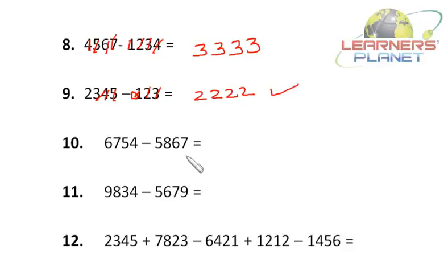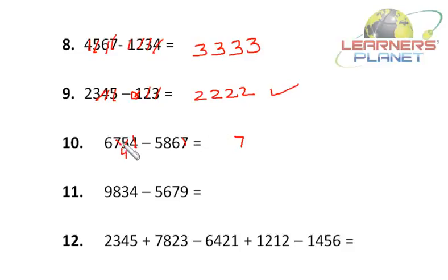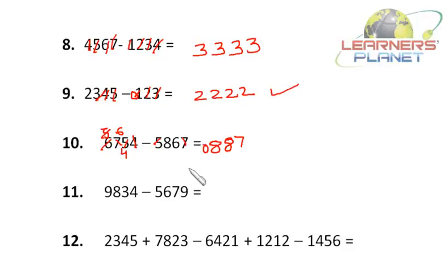Now let's do the problem 6754 minus 5867. We cannot deduct 7 from 4, so we borrow 1 — making the 5 become 4. Now 14 minus 7 is 7. Then we cannot do 4 minus 6, so we borrow 1, making the 7 become 6. Now 14 minus 6 is 8. Further we borrow 1 — 16 minus 8 is 8 — and then 5 minus 5 is 0. So the answer is 0, 8, 8, 7, which is 0887.